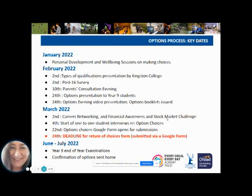From the 4th of March we start one-to-one face-to-face student interviews about their option choices, so all of the year 9 students will be invited to meet with a member of the senior leadership team to discuss their options and make sure that they understand the processes and the thinking involved. Then on the 22nd of March, the choices form on which the children will be choosing their options will open for submission. It will not open prior to the 22nd, to make sure that people don't make up their minds too quickly and that it is a considered decision.